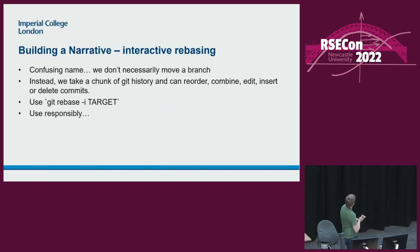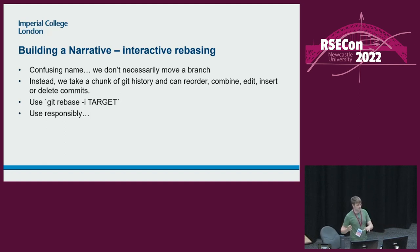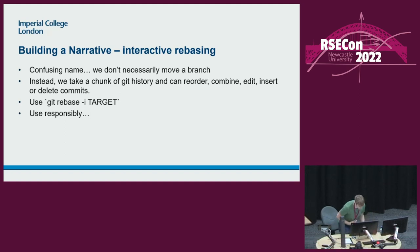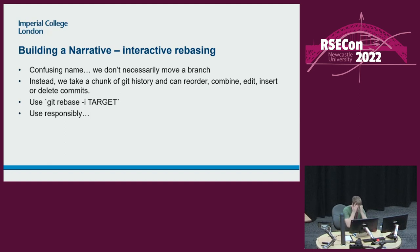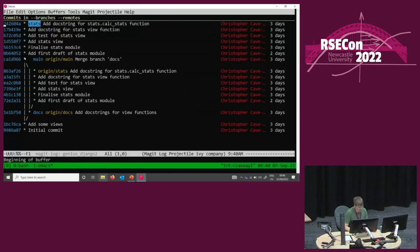This is the really fun stuff. Interactive rebasing is confusingly named — it's not necessarily anything to do with actually moving a branch. Rebasing kind of makes sense as a name — you're changing the base of a branch. Interactive rebasing makes no sense; we're not necessarily moving anything. Instead, what it lets you do is take a chunk of git history and basically just do whatever you want to it: rearrange it, reorder it, add commits, combine commits, edit, insert, delete — whatever. This is kind of the real power where git history really becomes malleable and we can do whatever we want with it. So let's do an interactive rebase on main. What this does is it will open up your text editor, and magic has been slightly clever — it can see you're trying to do an interactive rebase and gives you some clever stuff.